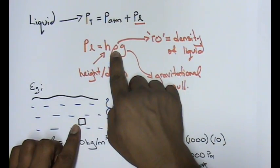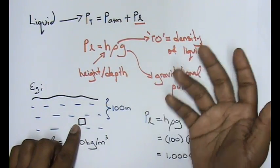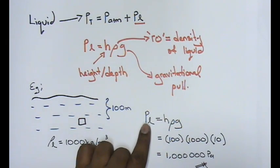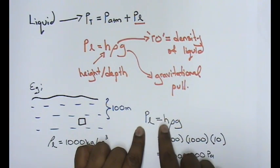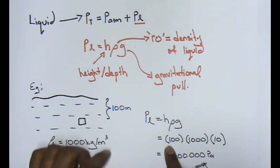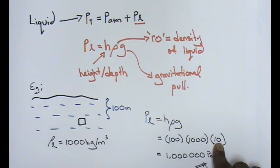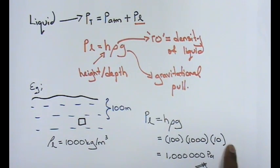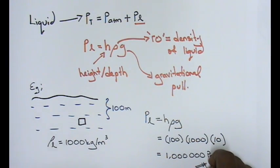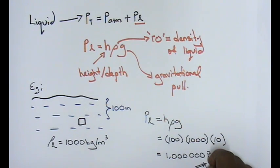The density of water or the density of liquid is given to me as 1,000 kilograms per meter cube. I just use the formula liquid pressure equals to h·ρ·g: my h is 100, the depth; 1,000 is the density; and 10 is the gravitational pull. Times the whole thing, I'll get 1,000,000 Pascal. The unit has to be in Pascal or Newtons per meter square, but in this case Newtons per meter square is also known as Pascal.